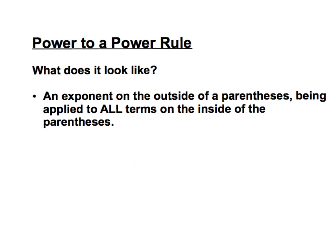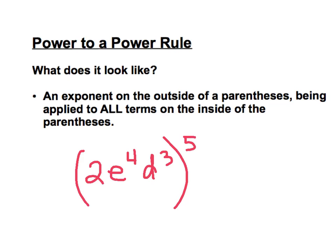The power to a power rule — if you think about the name 'power to a power,' hopefully that name itself can help us distinguish between these two rules. What a power to a power problem looks like is when we see an exponent on the outside of a parenthesis being applied to various terms inside the parenthesis. A problem that applies the power to a power rule might look something like 2e to the 4th, d to the 3rd, all raised to the 5th power. Whenever we see this parenthesis with a power on the outside, we apply the power to a power rule, which means we multiply our exponents.